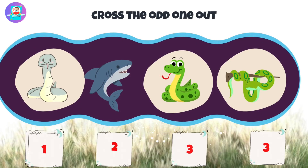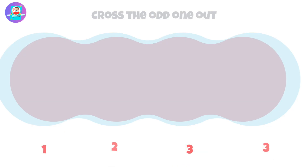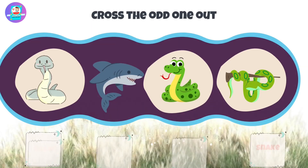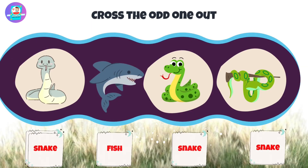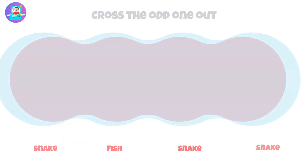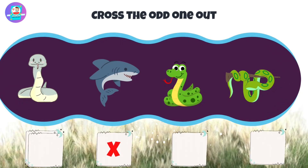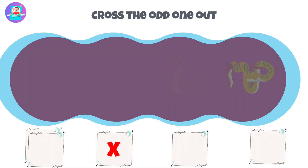Okay, let's check first. When we see here we have 3 snakes and 1 fish. There is a fish that is odd. So put a cross on this fish.